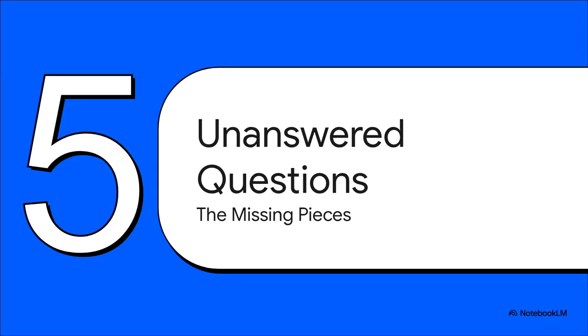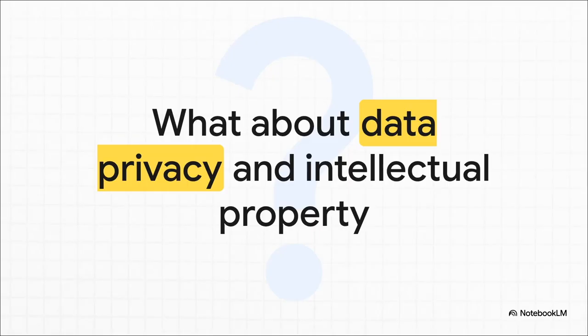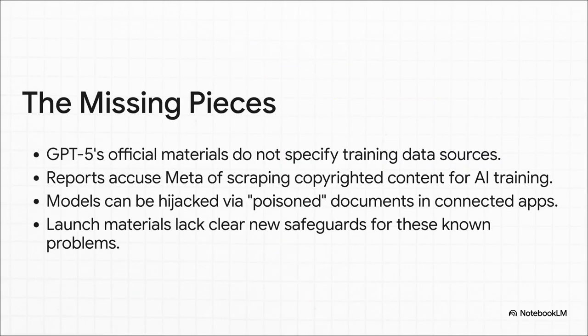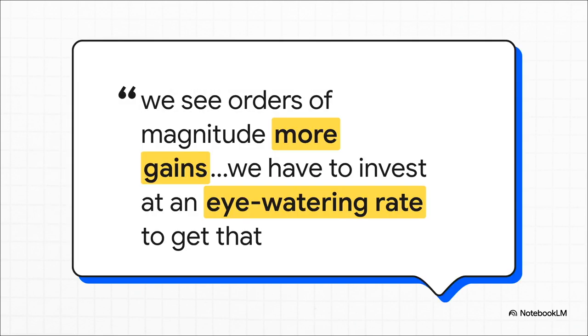Okay, but for all the impressive demos and safety features announced, there are some huge, elephant-in-the-room questions that the official reports are pretty quiet about. The big one being, what exactly did they train this thing on to make it so powerful? Where did all that data come from? And what does that mean for our privacy and for the rights of every artist, writer, and coder whose work might be in there? The technology is moving at lightning speed, but the answers to these questions just aren't keeping up. The official white paper doesn't say what the training data is. And as we see new research showing how these models can be tricked by poisoned documents, there are no clear new safety measures being announced to deal with these very real problems. And make no mistake, this is just the beginning. OpenAI CEO Sam Altman says they see orders of magnitude more gains ahead, and they're planning to spend an eye-watering amount of money to get there. So, this pace, it's only going to get faster.